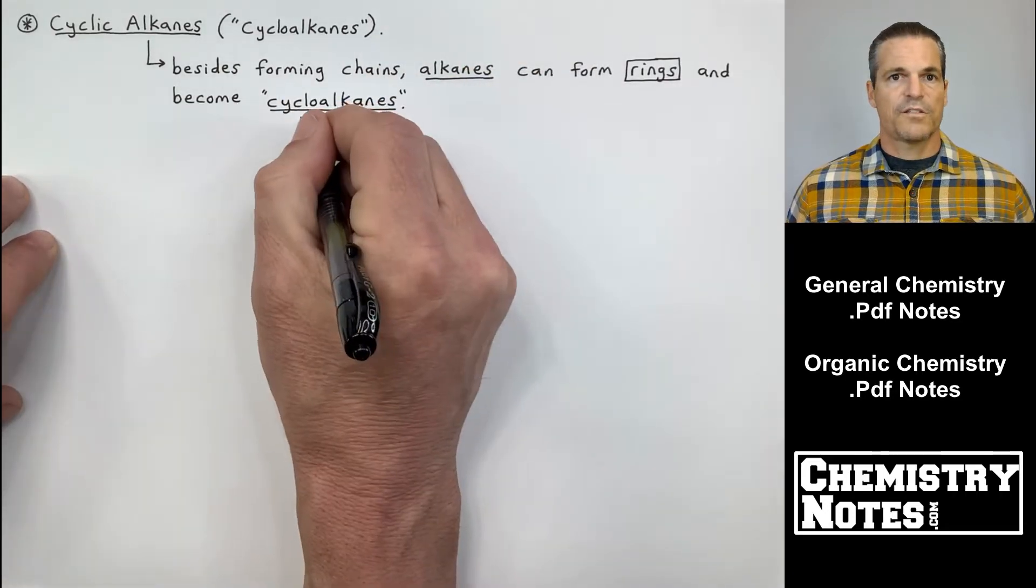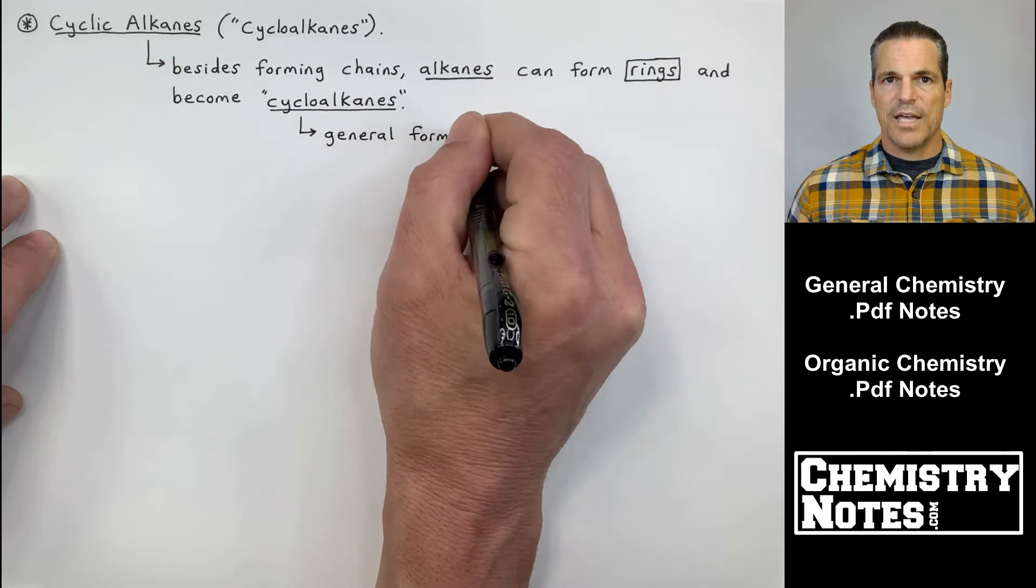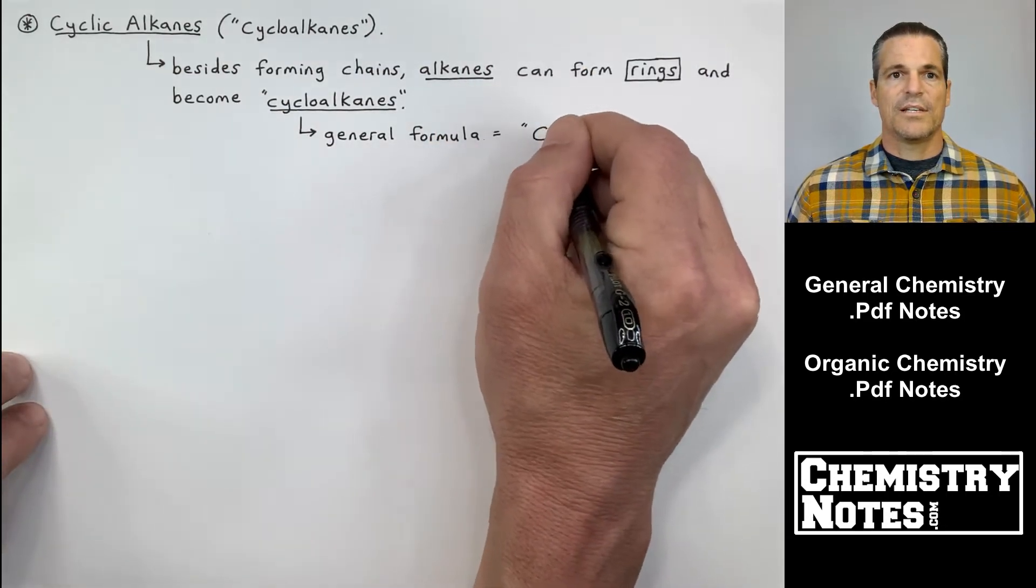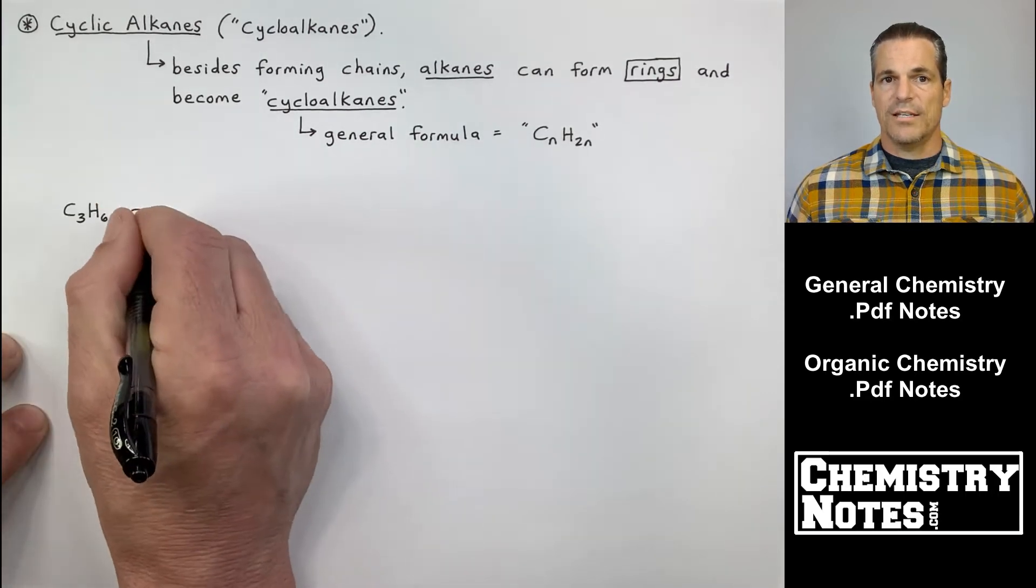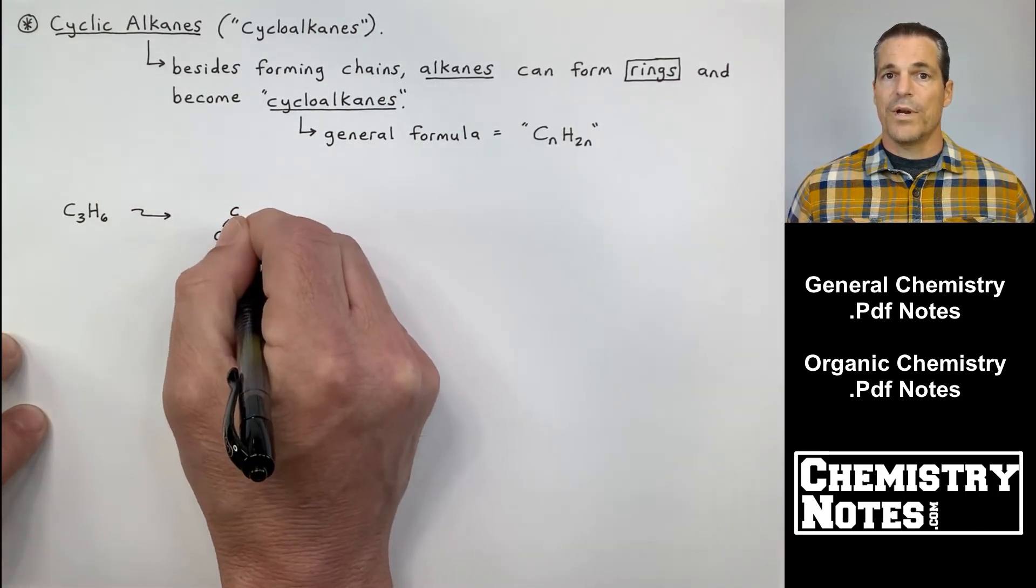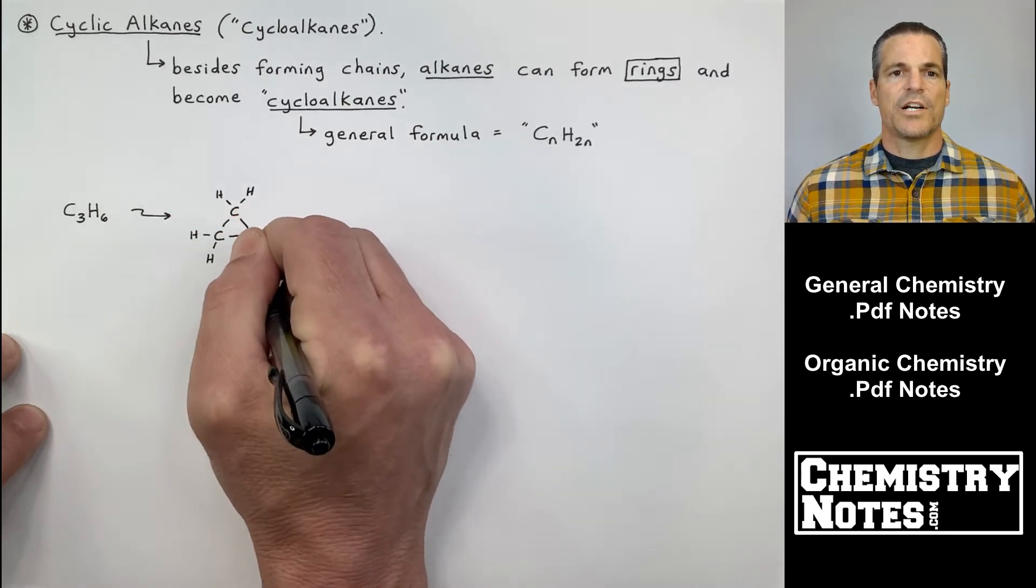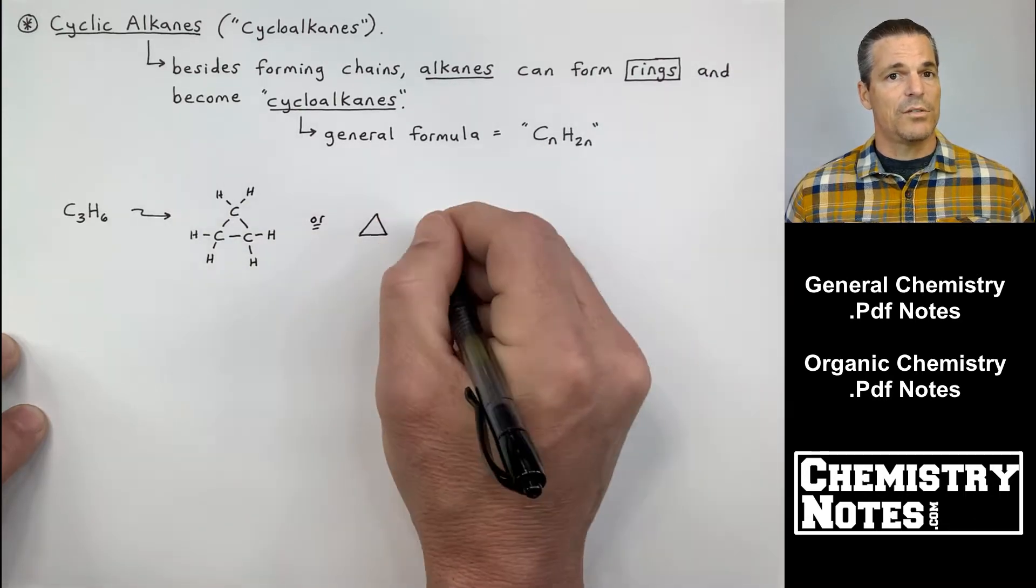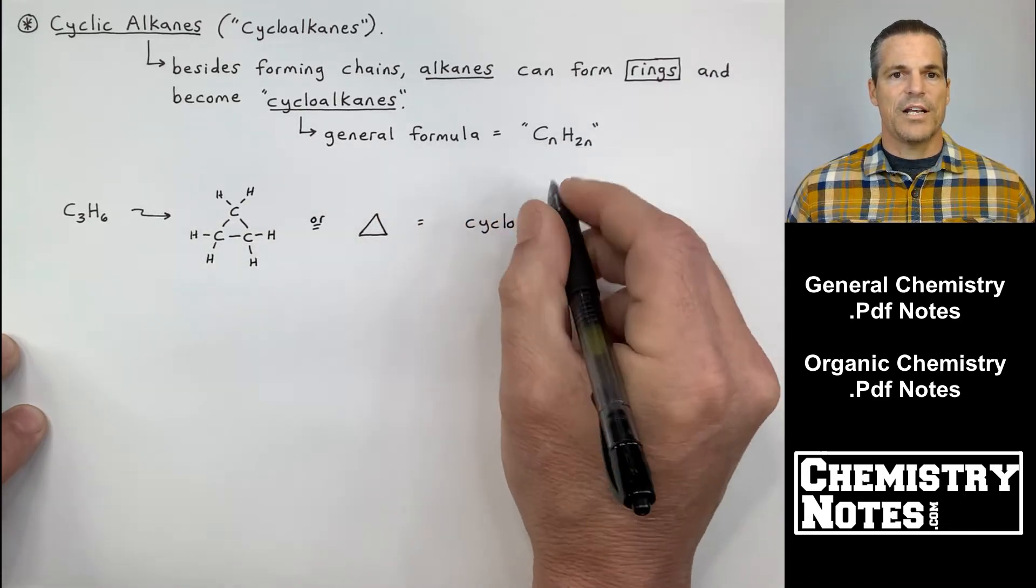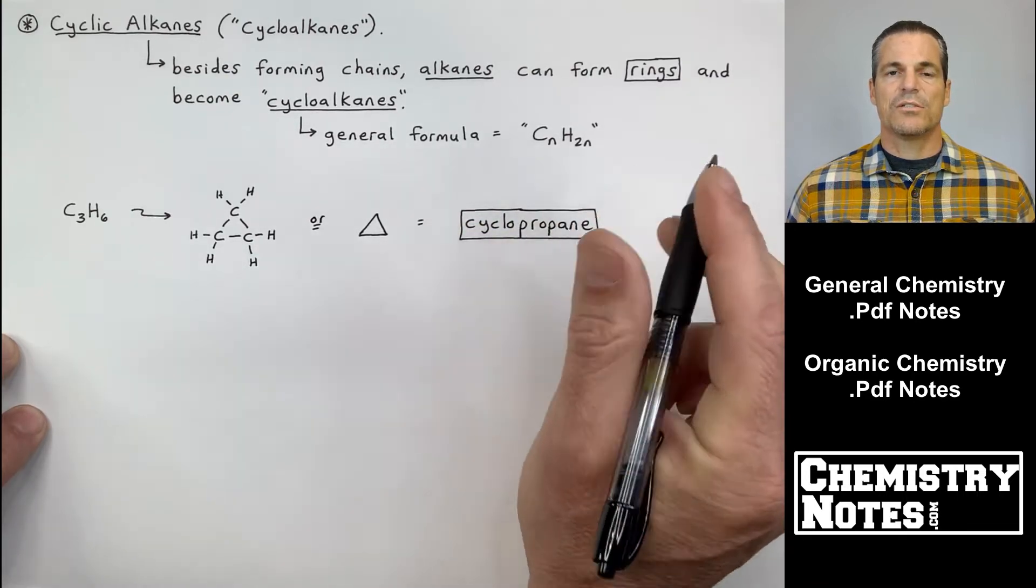So first things first, let's come right back to where we are. We're talking about cyclic alkanes, more commonly referred to as cycloalkanes. So it says besides forming chains, alkanes can form rings and become cycloalkanes. Notice the general formula is no longer CnH2n+2, like straight chain alkanes. The general formula is CnH2n.